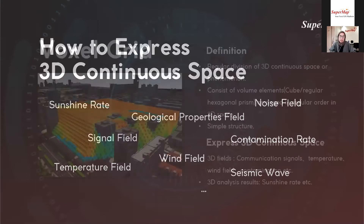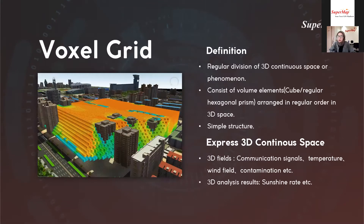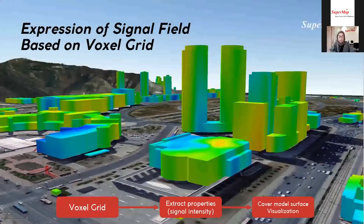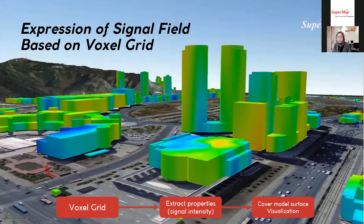To represent this data using a 3D model algorithm, the voxel grid is used for 3D space — it consists of volume elements arranged as regular hexagonal cubes in a 3D space. This is a simple structure. As an example of voxel grid realization, we try to express final values based on the voxel grid: the data spreads across the whole area, we extract properties, do a covering model surface visualization, and get the expression for each building.